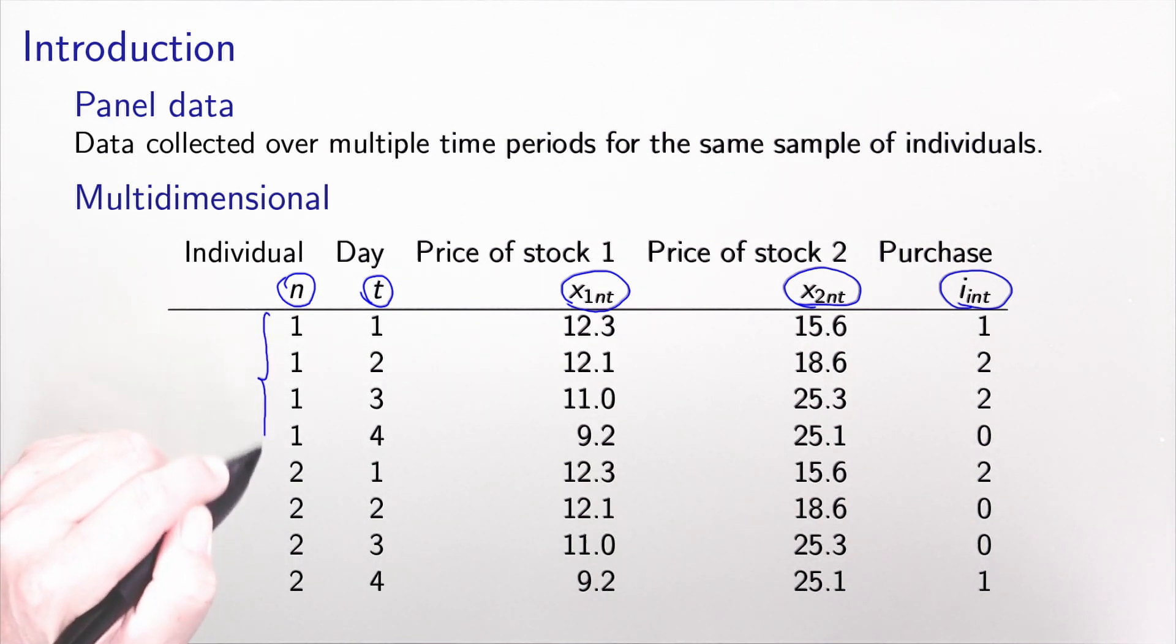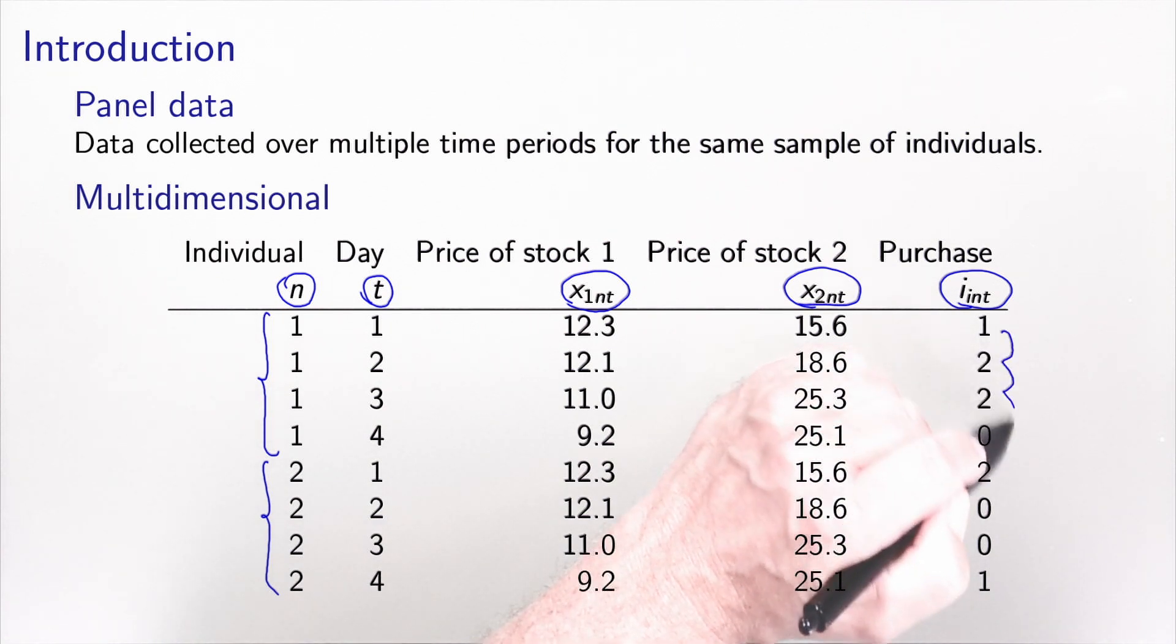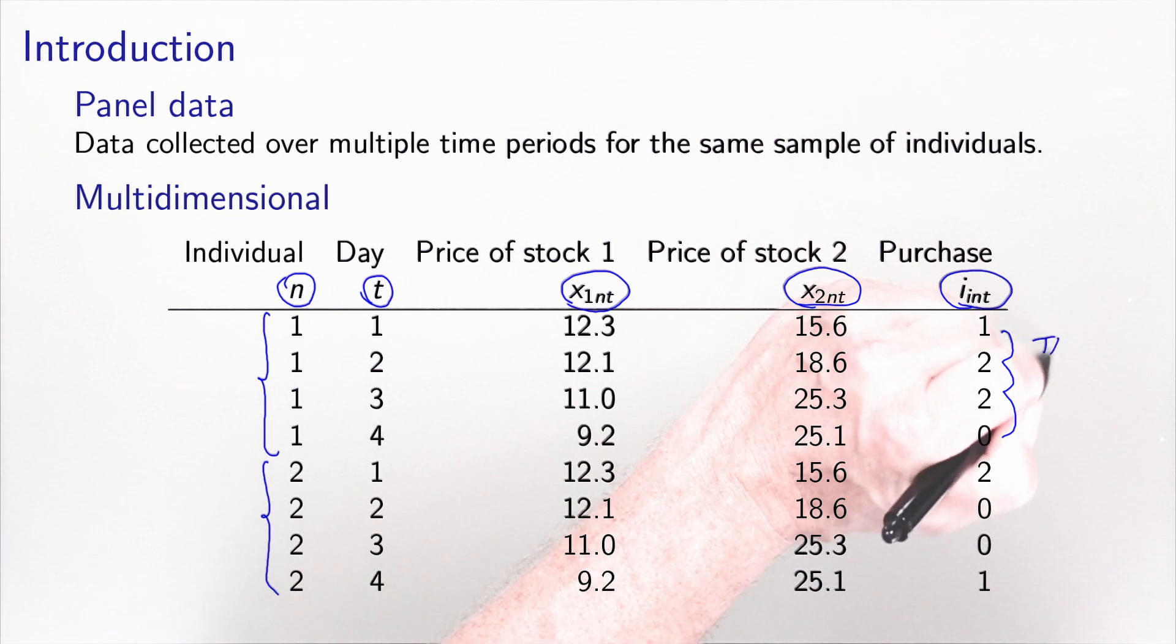The first four rows in this example are associated with individual one. Individual one on day one decides to buy stock one, on day two to buy stock two, on day three to buy stock two, and on day four not to buy anything. Then I have the same observation for individual two, and so on. The sequence of choices that people make, here one, two, two, zero, I will call this a trajectory.